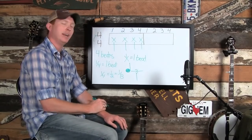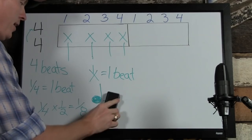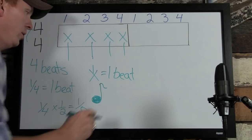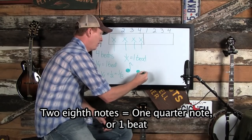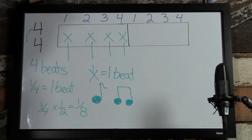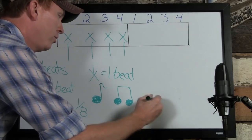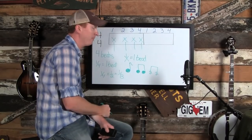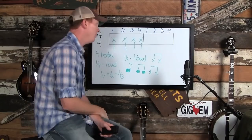Half of a quarter is one eighth. In standard notation, you denote an eighth note by adding a flag to the stem. A single eighth note has one flag on the stem, and when you put two eighth notes together, both have a stem and the flags are tied together — I'm sure many of you have seen that. In tab we do the same: two X's with stems tied together represent two eighth notes, which together equal one beat.